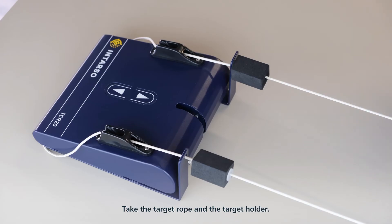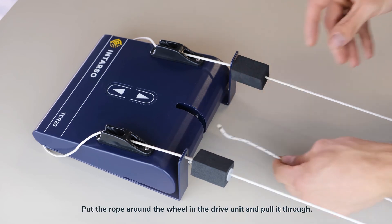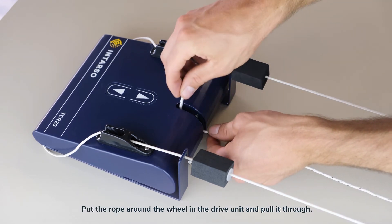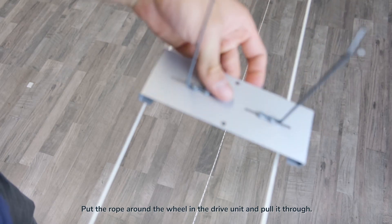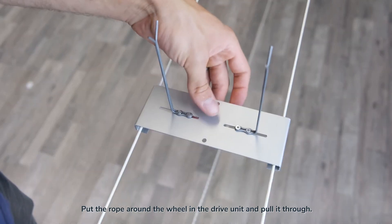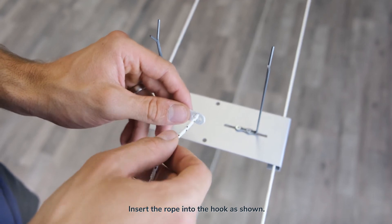Take the target rope and the target holder. Put the rope around the wheel in the drive unit and pull it through. Insert the rope into the hook as shown.